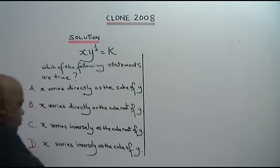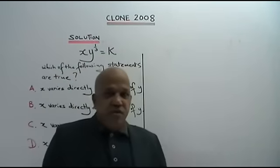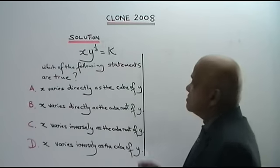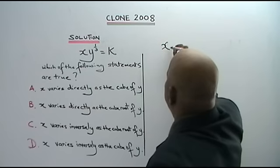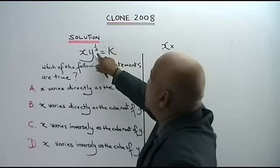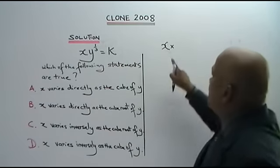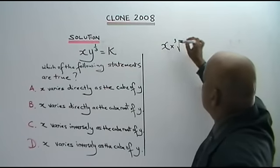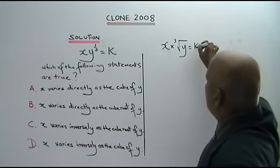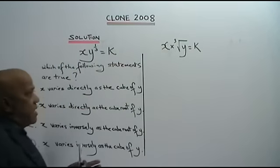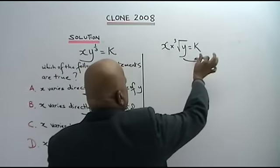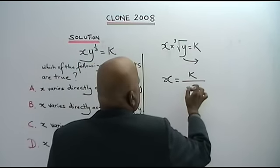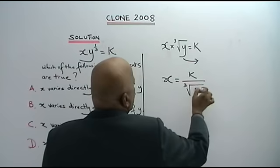Which is the correct answer? Let's see. It is very easy. x times y to the power of 1 over 3 equals to k. Let's see. Now if you look carefully, power 1 over 3 is actually cube root. y equals to k. From here we get this. We bring this down. So what do you get? x is equal to k over cube root of y. Very straightforward.